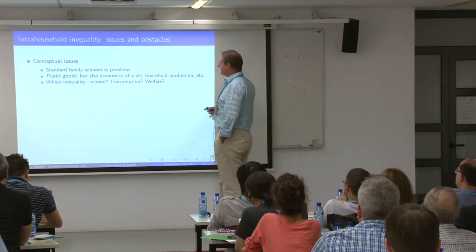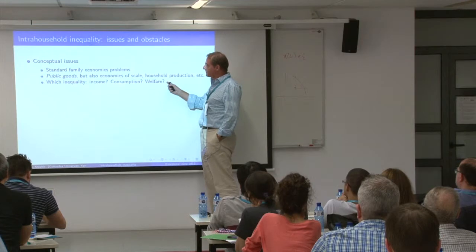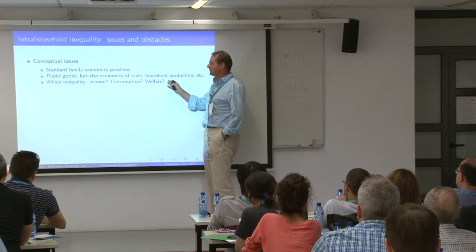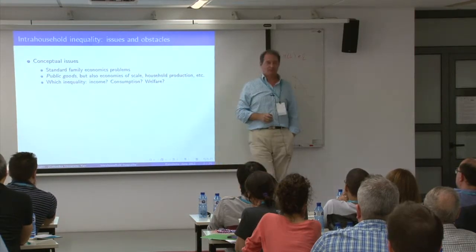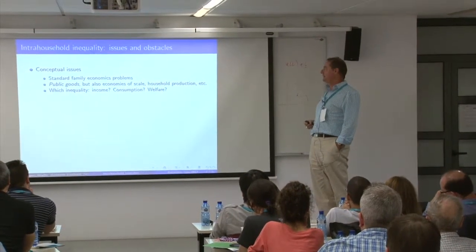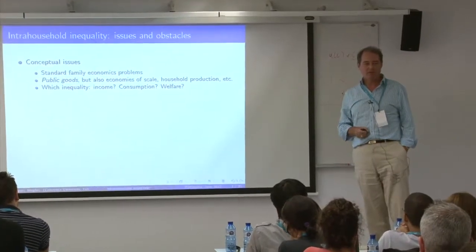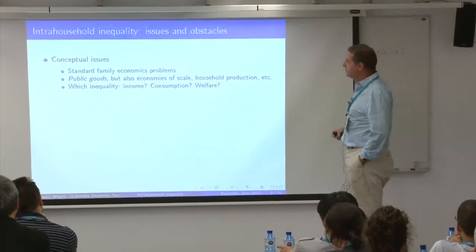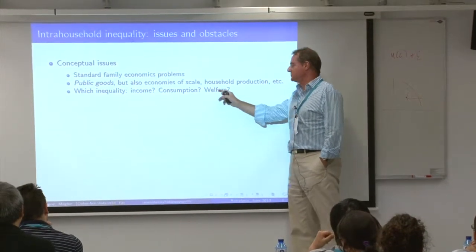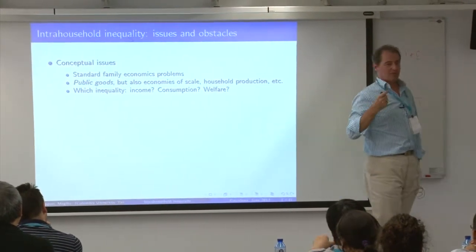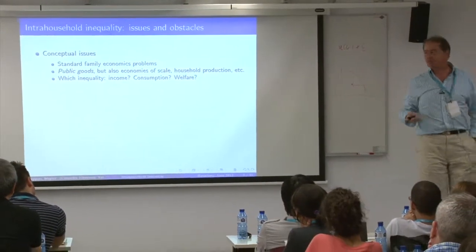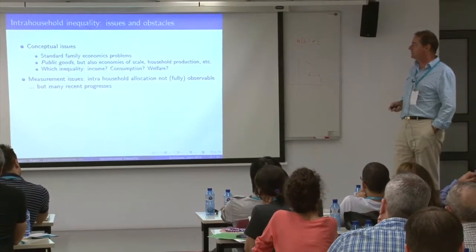At the end, this takes us to a question that was implicit in the literature but now becomes very explicit: what kind of inequality are we interested in? Inequality of income, inequality in consumption, or inequality in welfare? From a conceptual point of view there is a kind of strange relationship between them, and the relationship is even stranger when you think in terms of measurement.